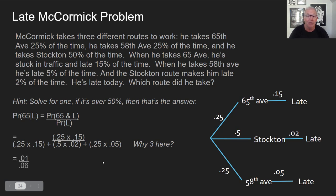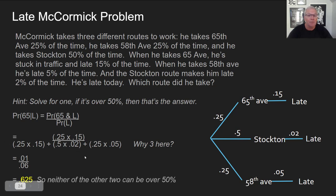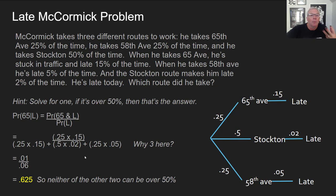We get 0.0375 over 0.06 once you calculate and multiply all those numbers, which adds up to 0.625. We just answered: what's the probability he took 65th Avenue given that he's late? You can imagine sitting in class, McCormick's late, and you do this calculation to figure out which way he came. This tells you there's a 62% chance he came by way of 65th Avenue.